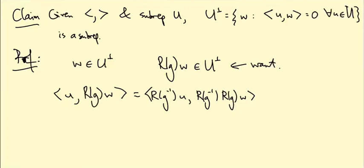And I get <R(g inverse)U, R(g inverse)R(g)W>. The R(g inverse)R(g) cancel, giving me the identity because R is a representation, so this is just <R(g inverse)U, W>. But now U is a sub-representation, so R(g inverse) of little U stays in big U, and W is in U orthogonal complement, so this inner product vanishes. So that shows me that if I start with something in the orthogonal complement and I apply a matrix from the representation, I stay in the orthogonal complement.